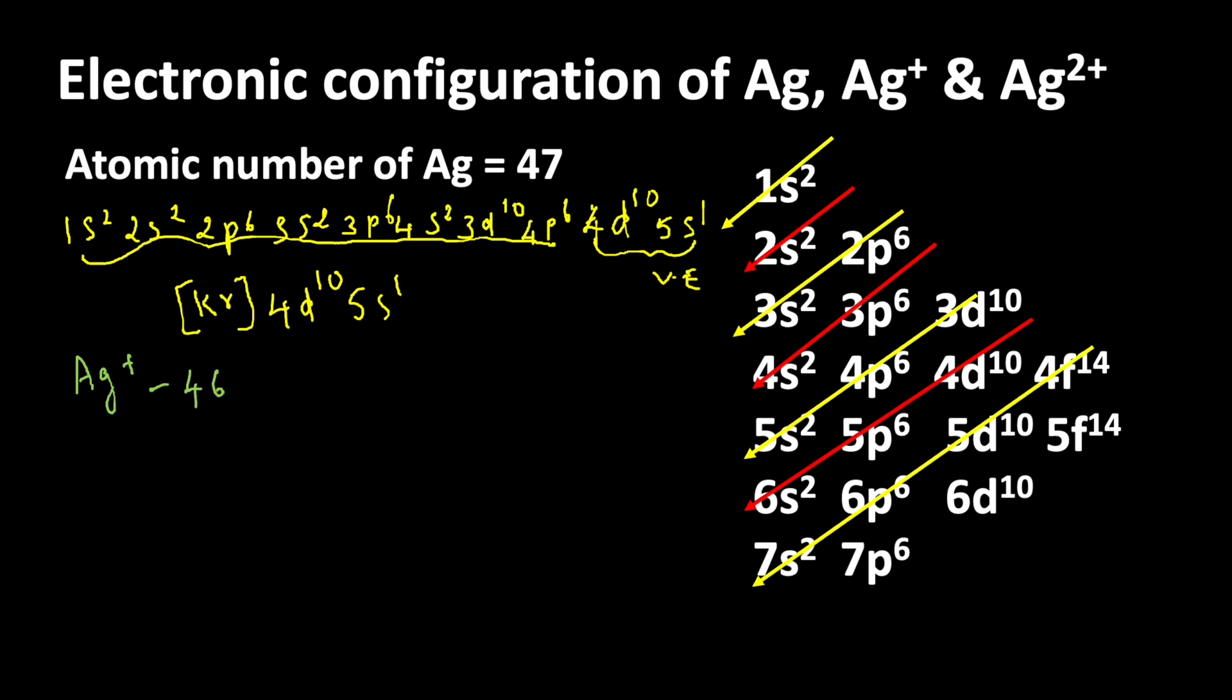Using the condensed electronic configuration, we write krypton first, then 4d10. The outer electron is the 5s1 electron. This electron is ready to lose whenever the atom forms a cation. So this is the condensed electronic configuration of Ag plus ion: [Kr] 4d10.